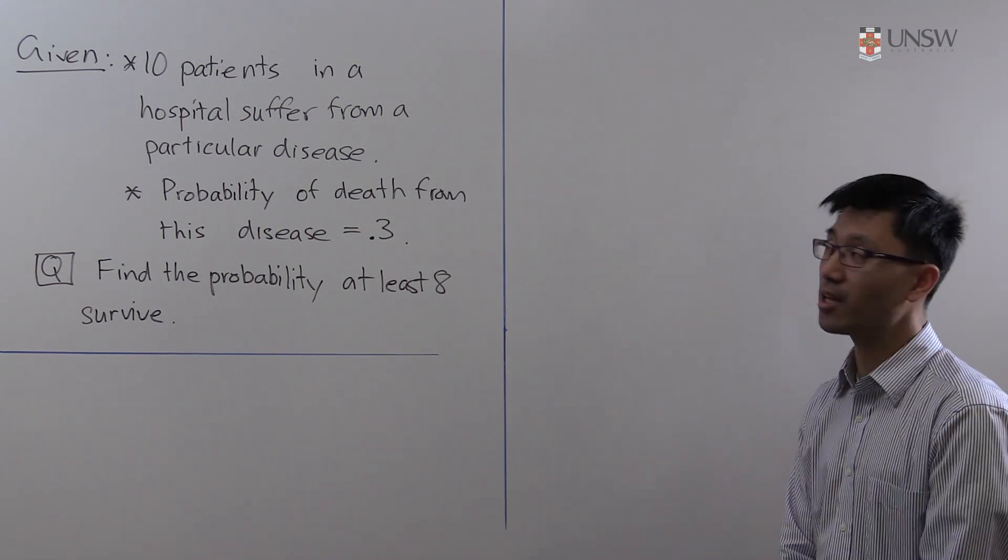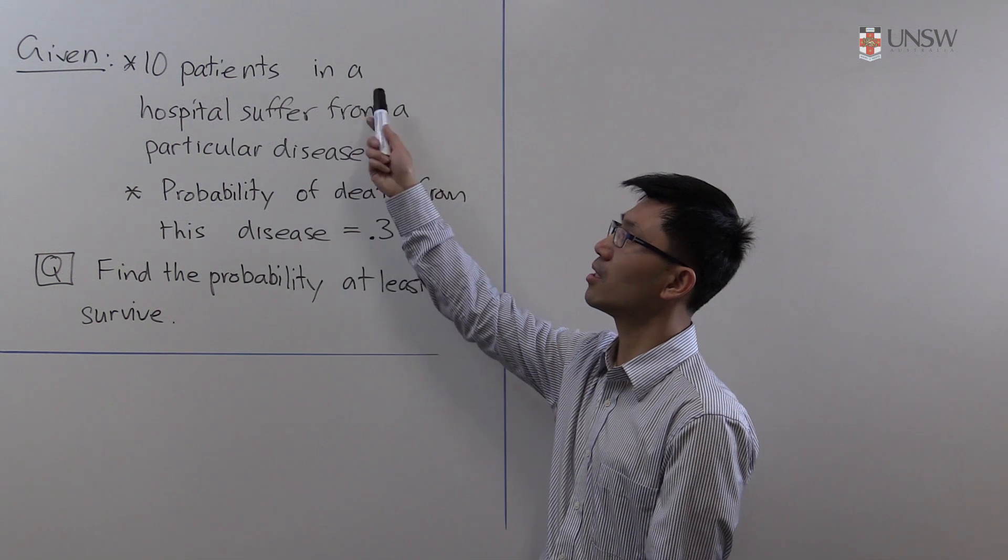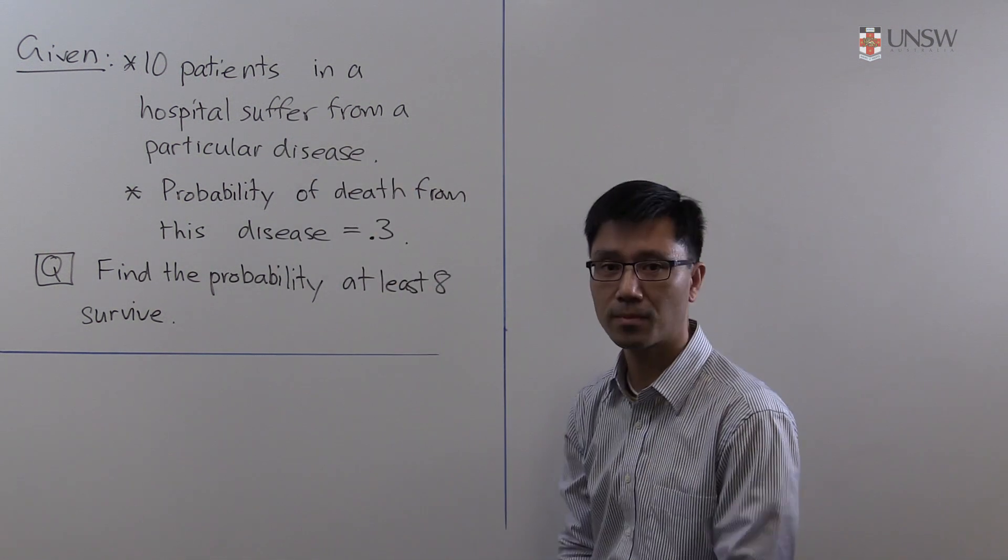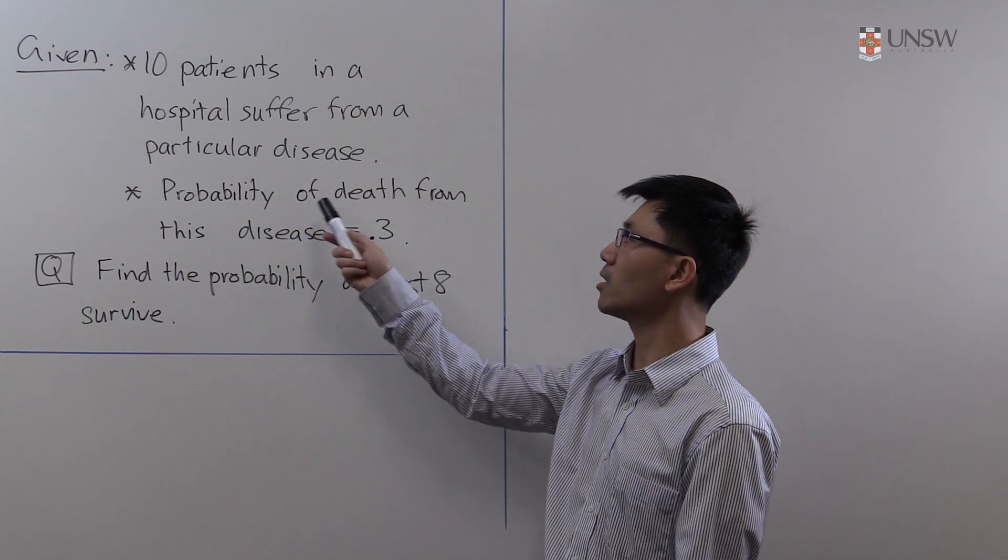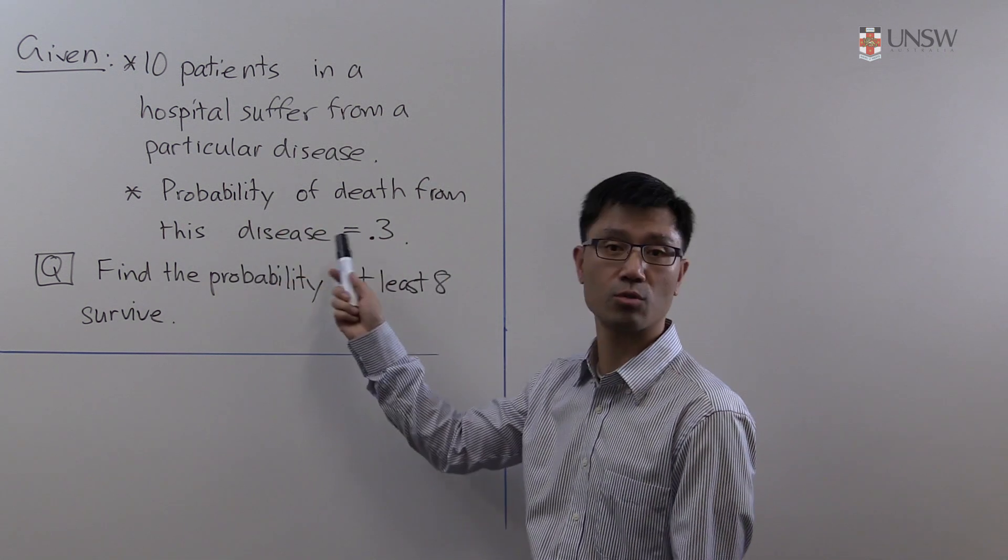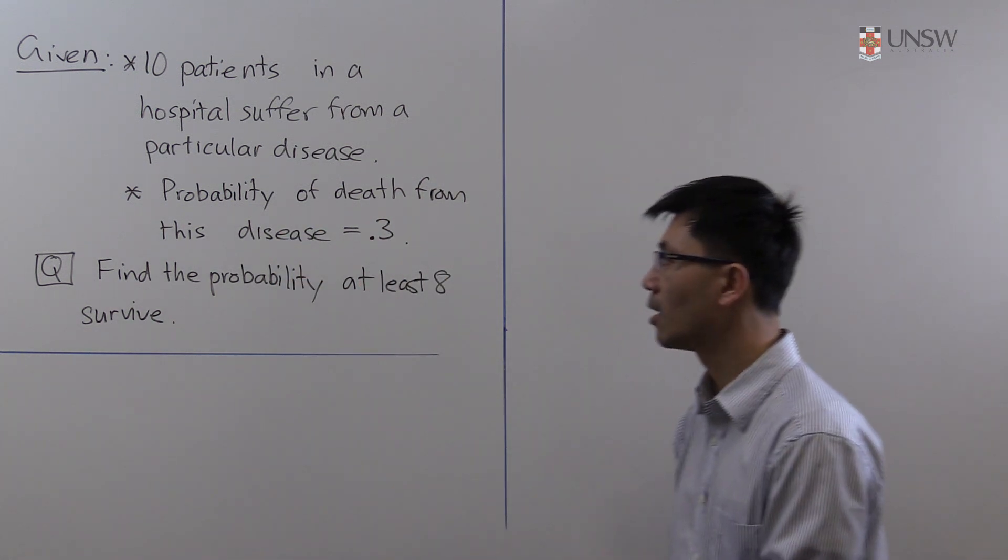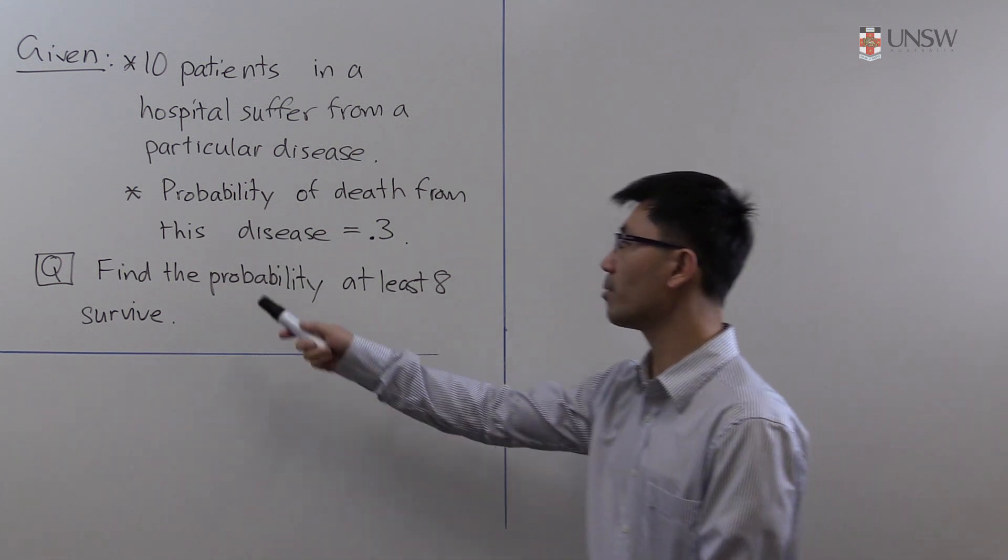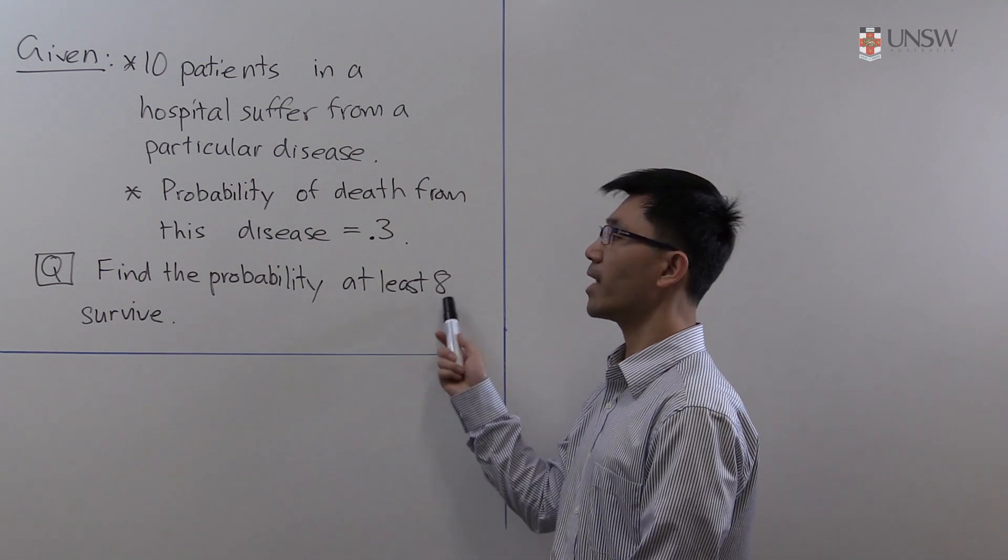Our question today involves ten patients in a hospital who suffer from a particular disease. We are told that the probability of death from this disease is equal to 0.3. The question is to find the probability that at least 8 survive.